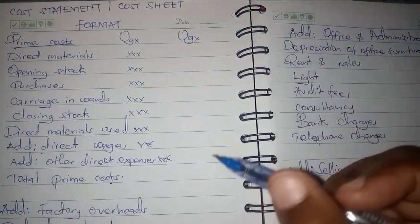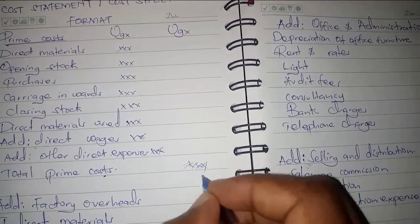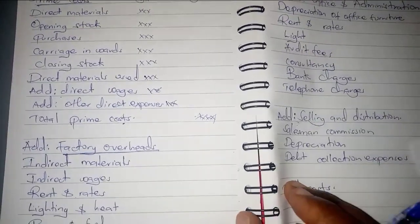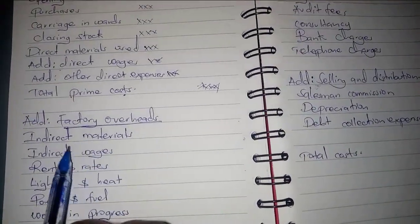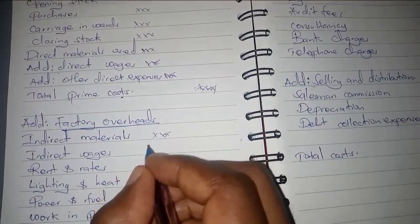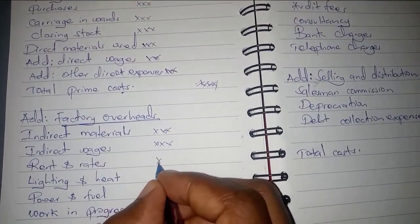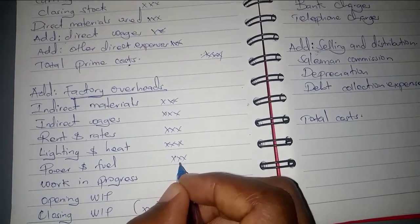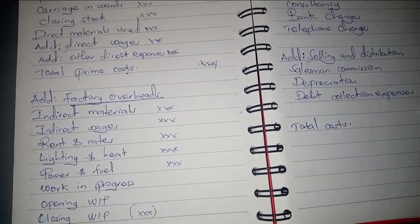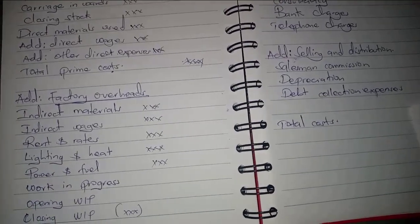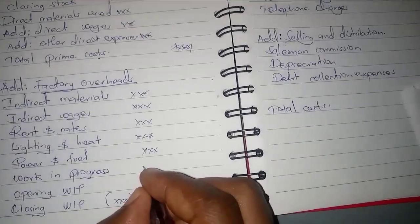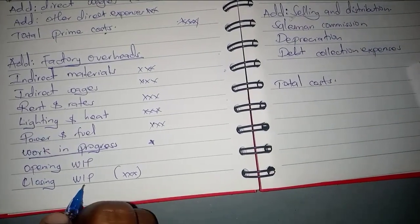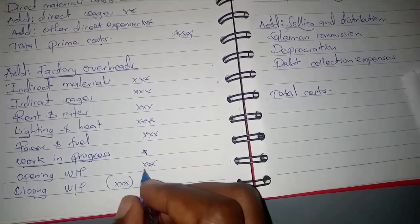We then add direct wages and also add other direct expenses to get the total prime costs, which you write in the total column. The next section is factory overheads, which includes indirect materials, indirect wages, rent and rates, lighting and heat, power and fuel — all expenses used in production but indirect ones. We also account for opening work in progress and subtract closing work in progress.